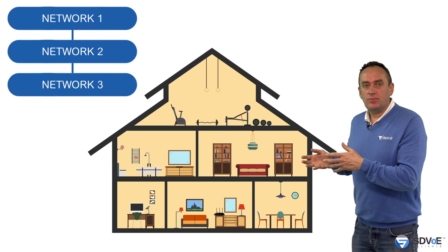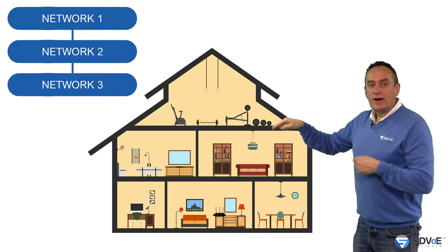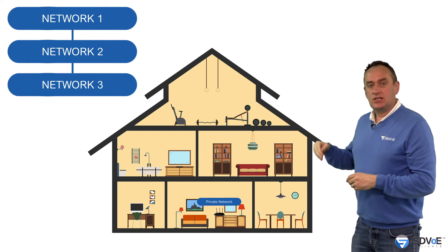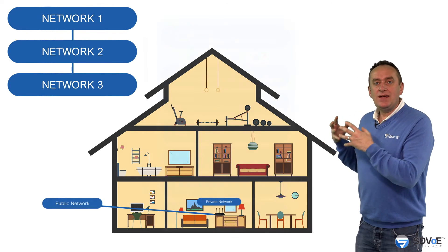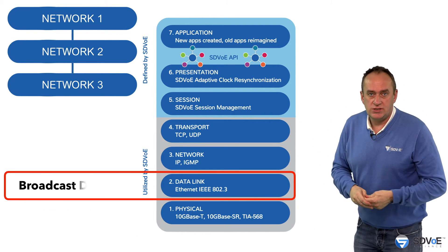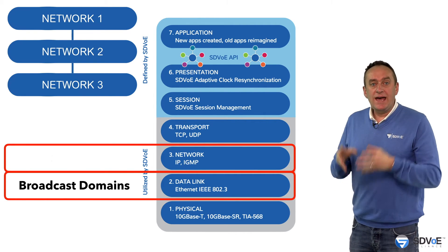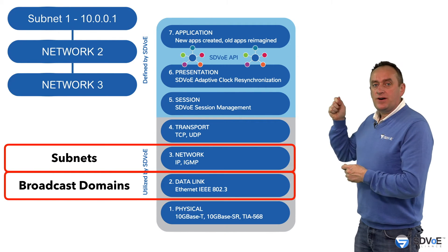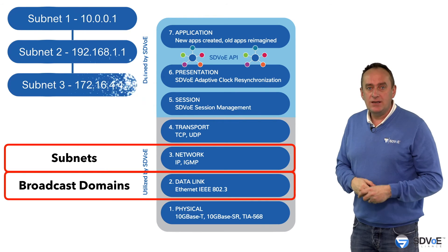A simple example would be a home network like this, where a router connects the private network inside the house to the public network outside the house. In the same way we call layer 2 networks broadcast domains, at layer 3 we call each network a subnet, and at layer 3 we identify each subnet using a different address called an IP address.